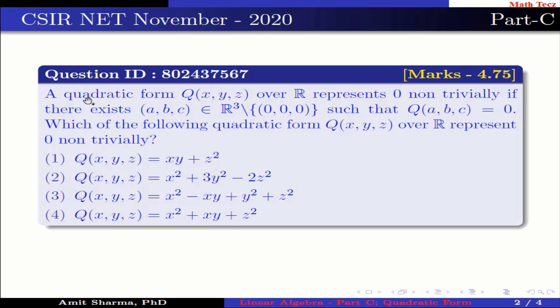Question is: a quadratic form Q(x,y,z) over R represents 0 non-trivially if there exists (a, b, c) belongs to R³ excluding (0, 0, 0) such that Q(a,b,c) = 0. Which of the following quadratic forms Q(x,y,z) over R represent 0 non-trivially?